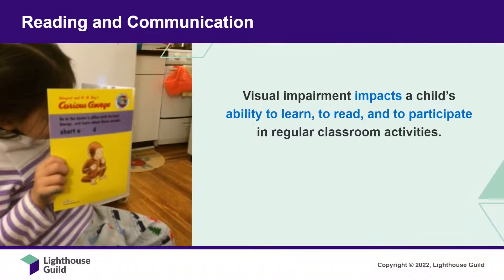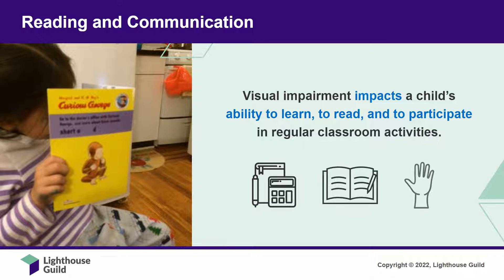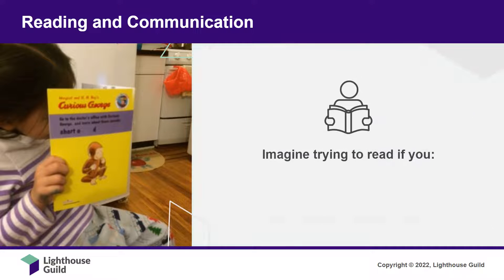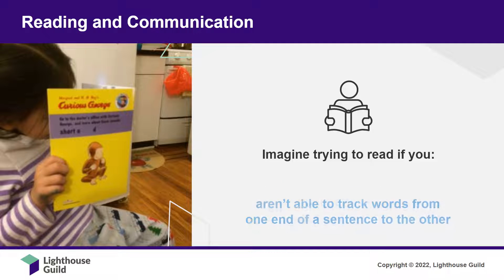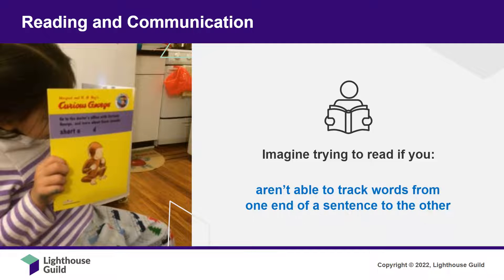Visual impairment, whether it's mild or severe, impacts children's ability to learn, to read, and to participate in regular classroom activities. If not addressed, this may keep them from reaching their full academic potential. Imagine trying to read if you cannot see the letters clearly, or if you can't keep your gaze focused on one letter or word, or if you aren't able to track words from one end of a sentence to the other.